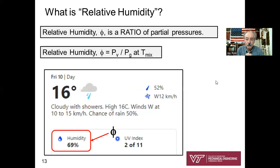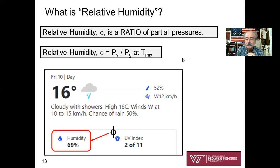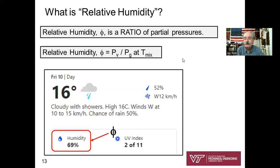Next definition in our crash course: relative humidity, Greek letter phi. You have a physical feel for it — high relative humidity feels muggy and damp, meaning a lot of vapor in the air. Low relative humidity feels dry, meaning a low amount of vapor.